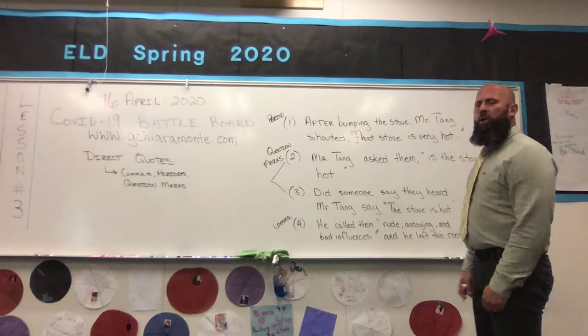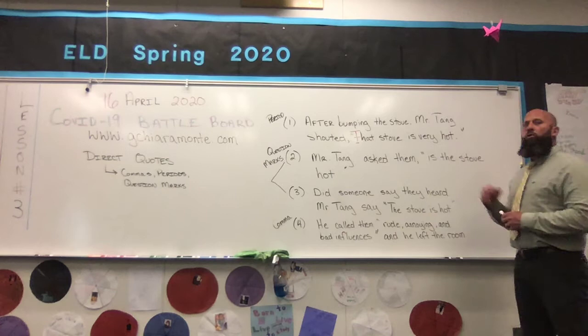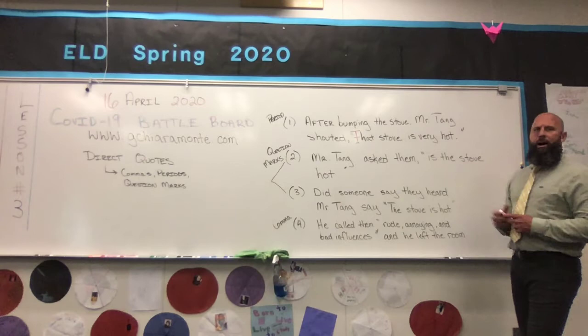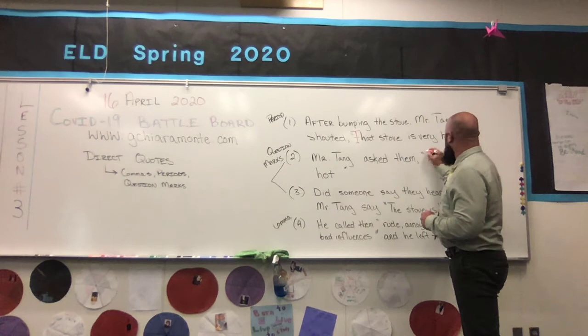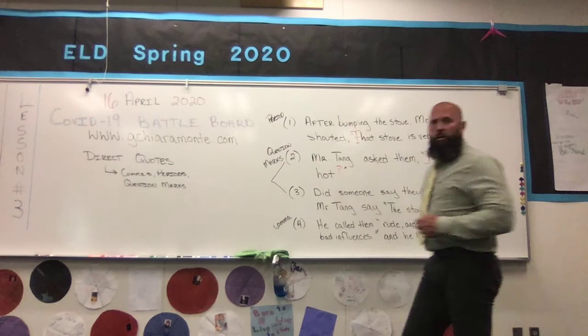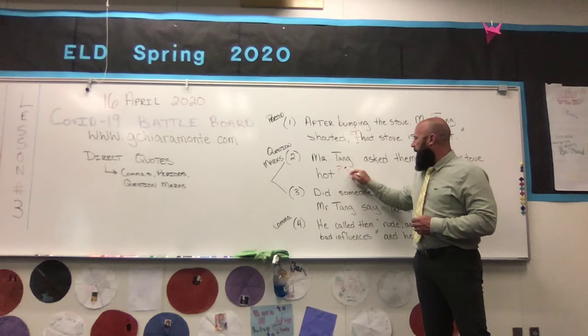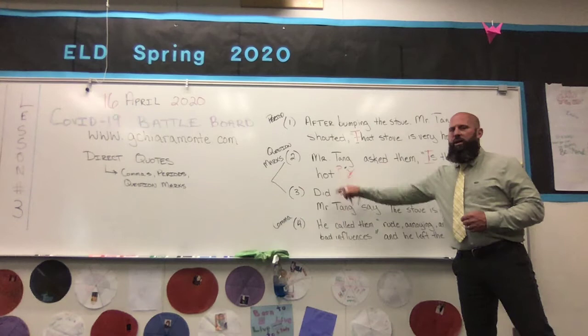Number two: question mark. When we apply a question mark, it's going to be different than a comma or a period. The first example is an actual direct quote question. You'll see: 'Mr. Tang asked them, is the stove hot?' Capitalization — we want to capitalize I. So we capitalize I: 'Is the stove hot?' Because the direct quote is in and of itself a question, we're going to put the question mark inside the quote. We don't need to put a period or anything like that after. The question mark takes care of the punctuation in this case.